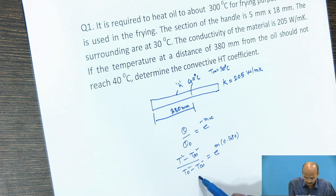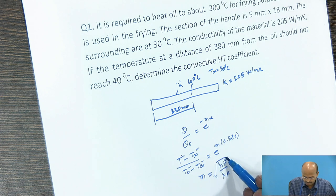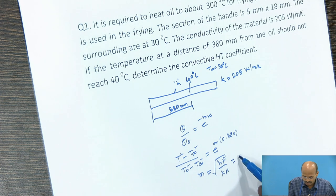Then we will get M. As we know, M is nothing but the square root of HP by KA. And this value we will get as 8.673.